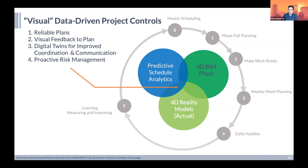Over the years, I've been working on a data-driven approach to project controls using visual data specifically. The thinking has been: if you can create 4D BIM, we've shown in many cases the value it brings. If we can generate reality data, we can use that as feedback to the plan. The combination — which I'll call a digital twin, a replica of that BIM that comes from reality — serves as a basis for addressing coordination and communication issues. And if I can find the delta, I might have an opportunity to apply predictive data analytics, analyze the schedule, and forecast the future.